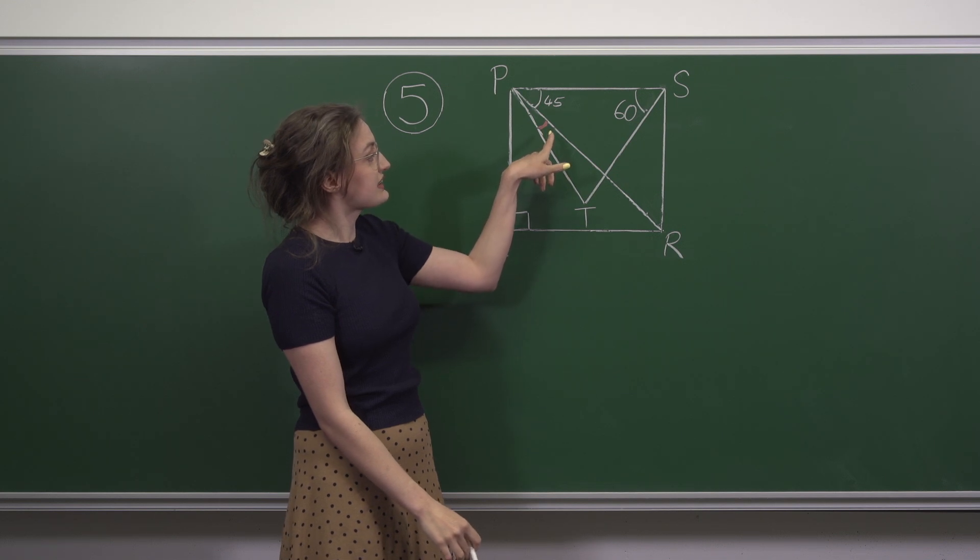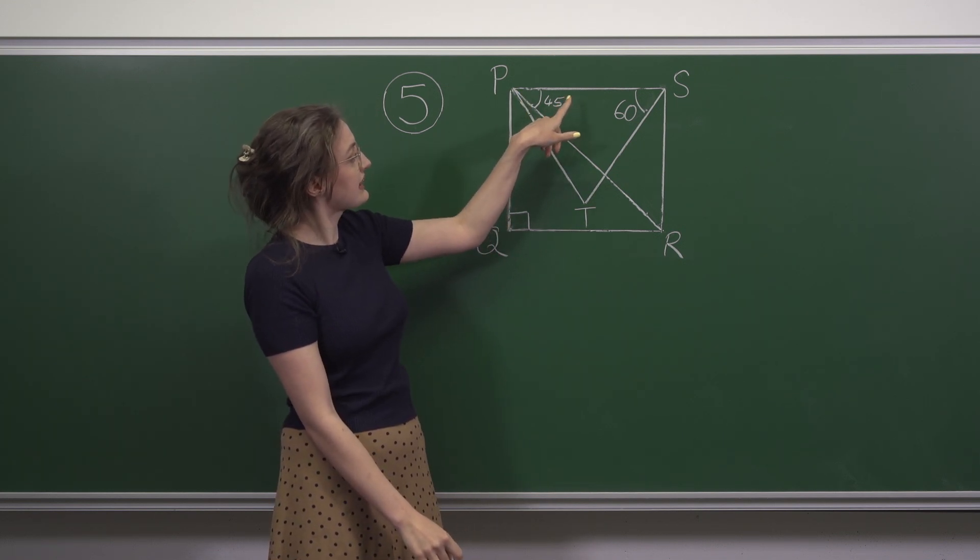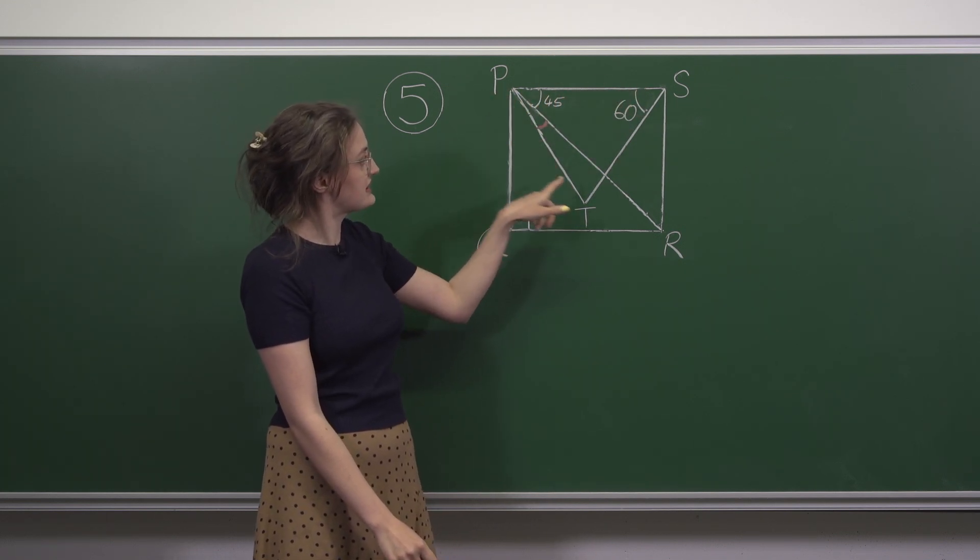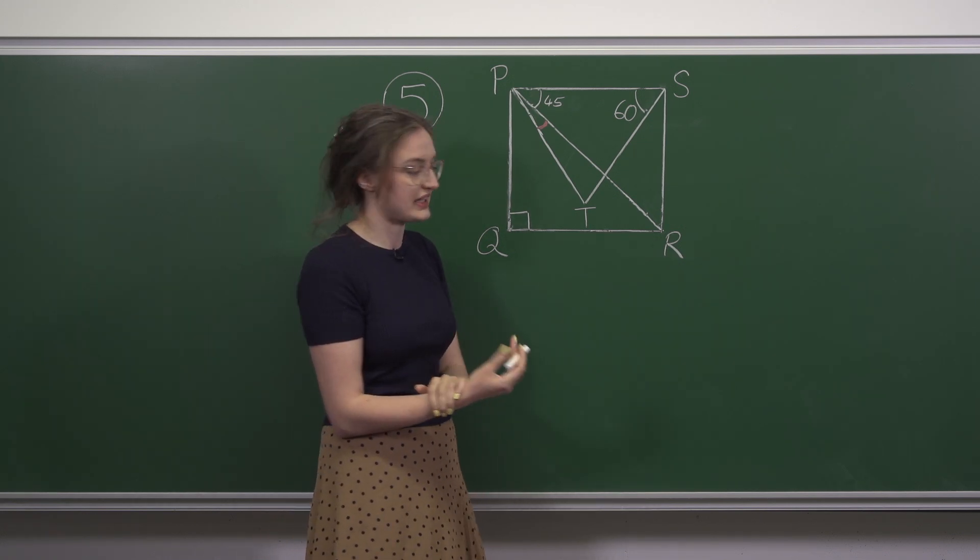Now, we can find the angle in red by taking the 45 degrees away from SPT. So 60 minus 45.